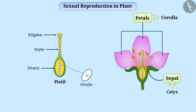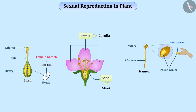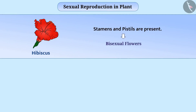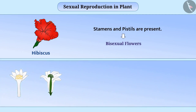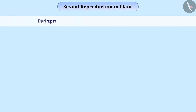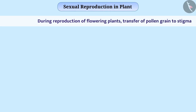The ovary contains ovules and each ovule has one egg cell, which is the female gamete of the plant. During reproduction of flowering plants, it is necessary to transfer pollen grain to the stigma. We call this pollination.